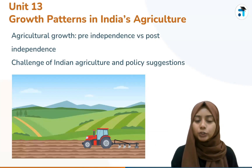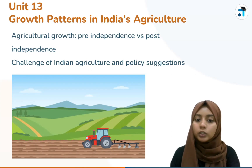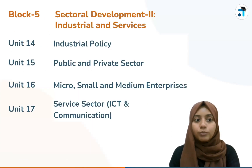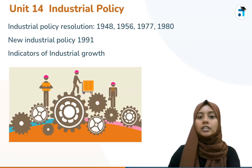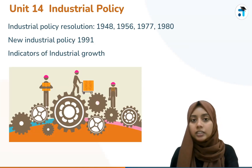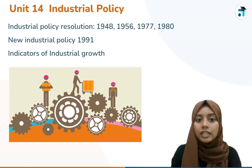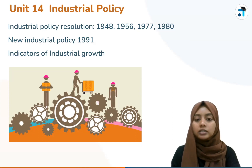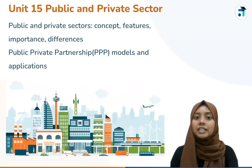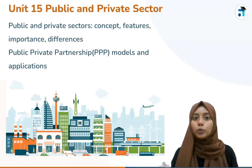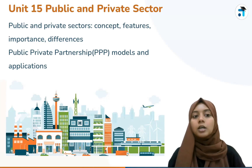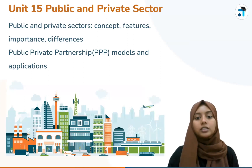In Unit 14, we discuss the development of the agricultural and industrial sectors. We cover indicators of industrial growth — two key indicators. Units 14 and 15 cover the importance of the public and private sector, their features, and the concept of public-private partnership and public-private model.